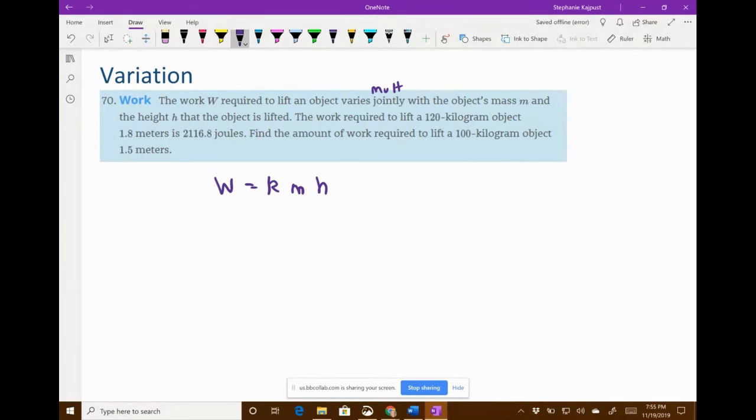Then they give us information. It says the work required to lift a 120 kilogram object. So that is the mass. I have my K, but I know the mass is going to be 120 kilograms. And then H is the height. So when they say 1.8 meters, that's going to be our height. So that's going to be 1.8. And then they're telling us the work. So that's 2,116.8.